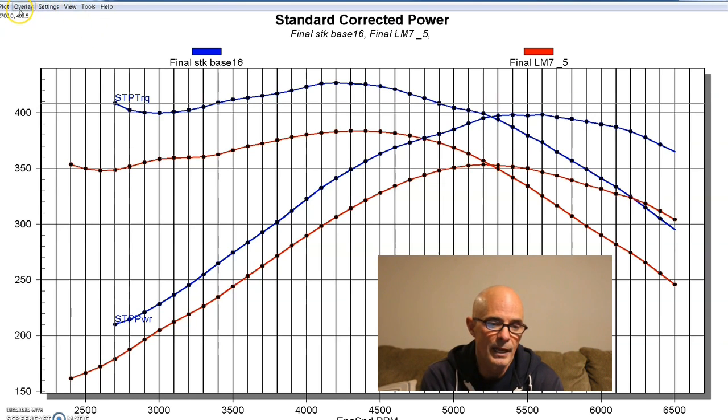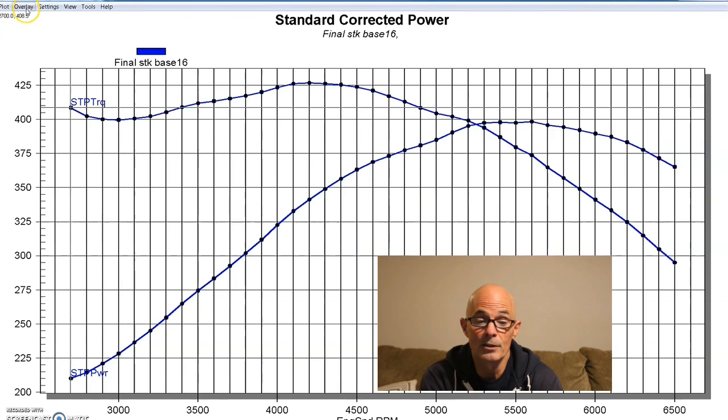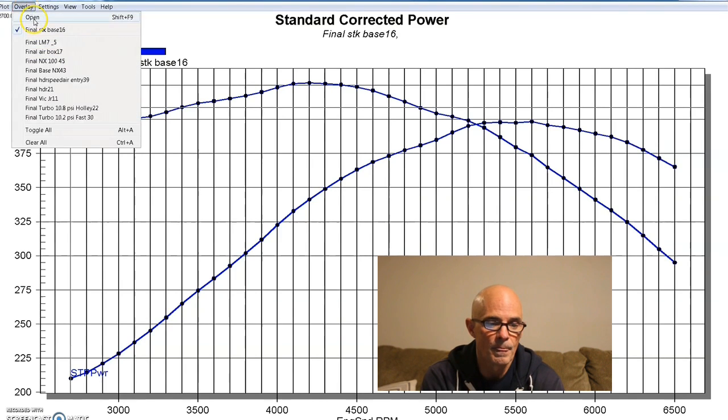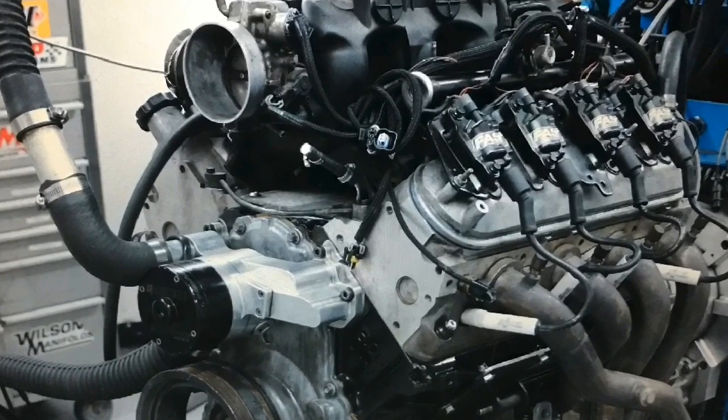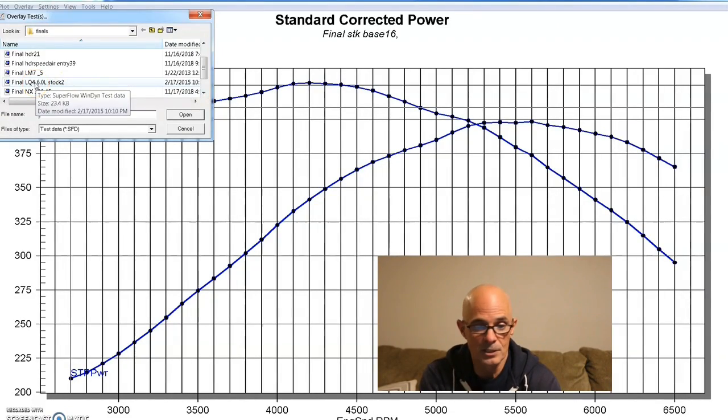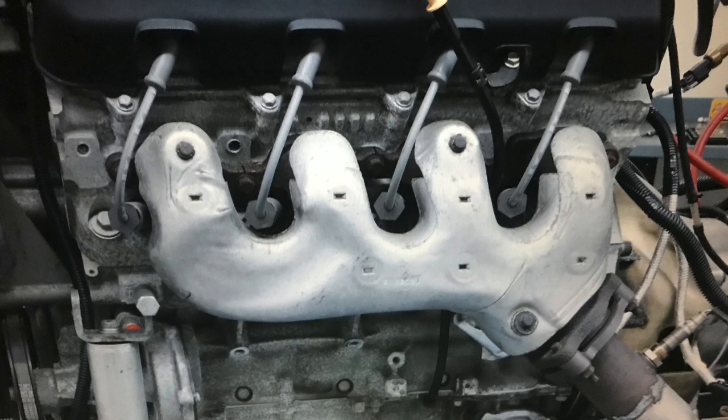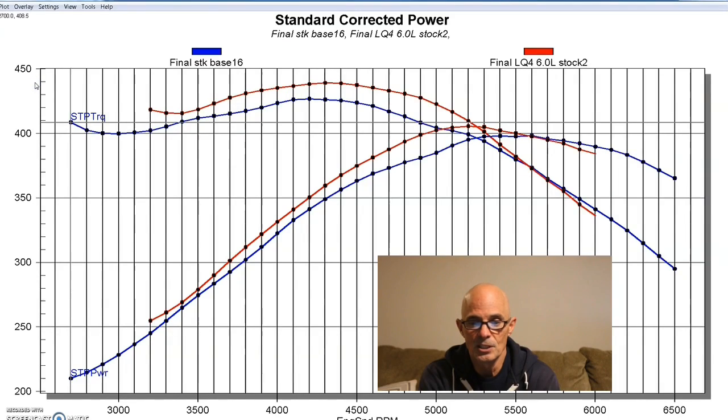Let's take a look at this 5.3 liter L83 direct injected motor against a 6 liter. Now, this is a factory LQ4 rebuilt with headers. As a matter of fact, this L83 right now doesn't even have headers on it, it had stock exhaust manifolds. But the 6 liter is maybe just a touch better in certain places. It shows you how far the 5.3 liter L83 has come. It's an impressive piece.